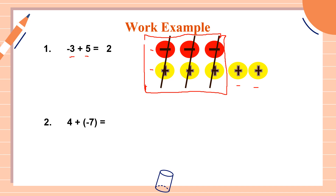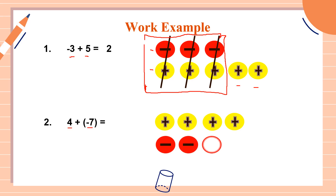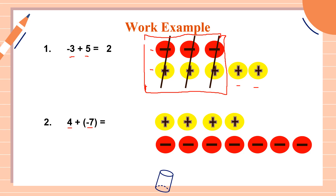Let's have example number two: positive four plus negative seven. Four is positive, so we need four yellow chips: one, two, three, four. Plus negative seven — we need seven red chips: one, two, three, four, five, six, seven.